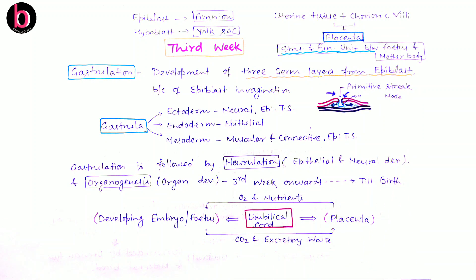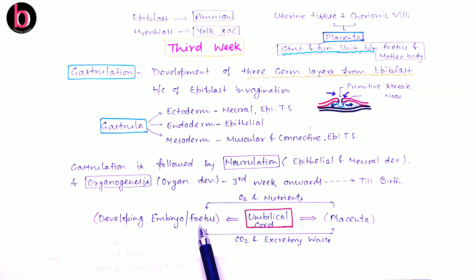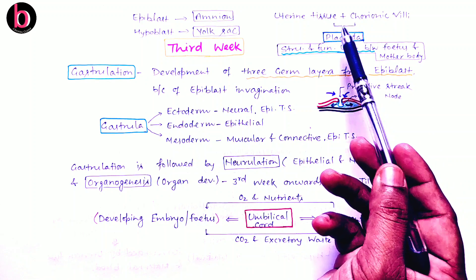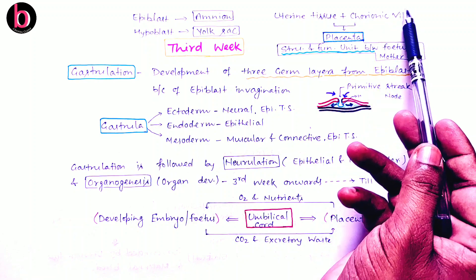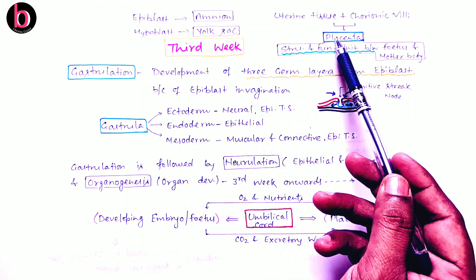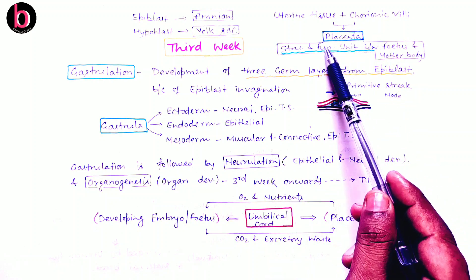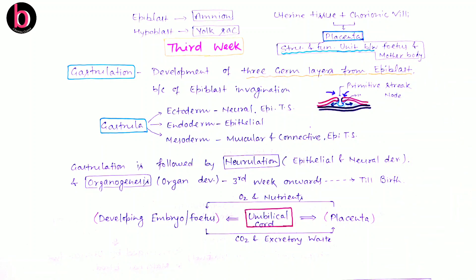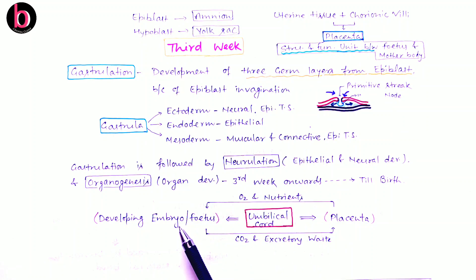The developing embryo or fetus — embryo for the first two months, fetus thereafter — is connected with the placenta. Placenta is formed by the connection of chorionic villi (modified trophoblast) with mother's uterine tissue. The umbilical cord is developed from the yolk sac and mesoderm, forming a link between the placenta and the developing fetus.